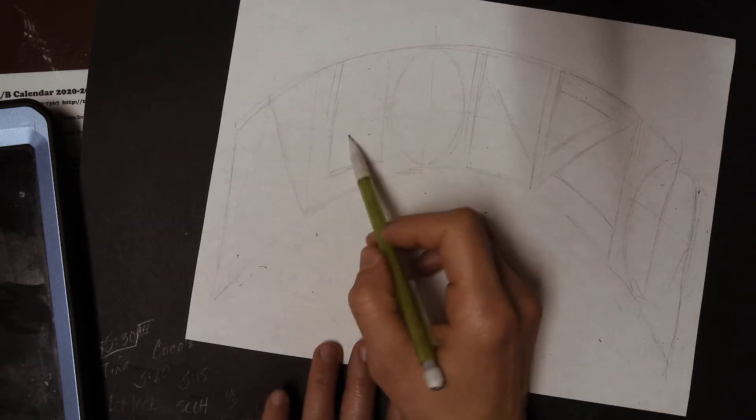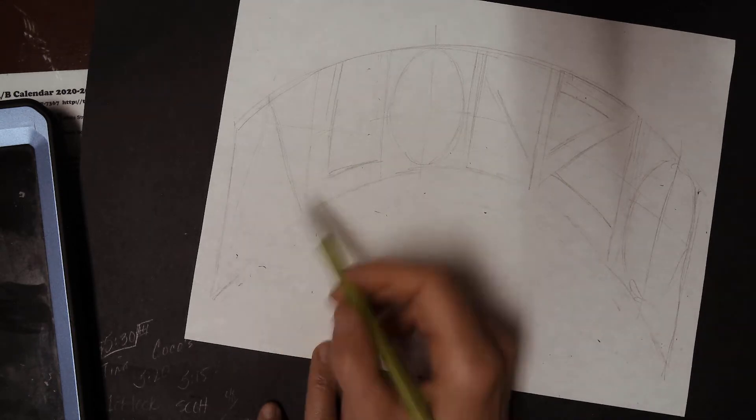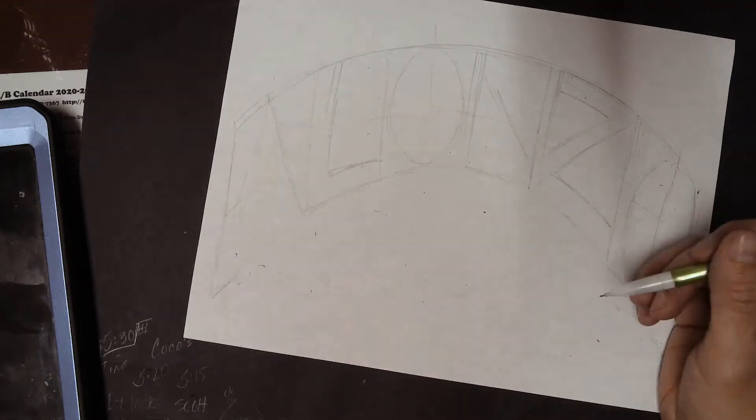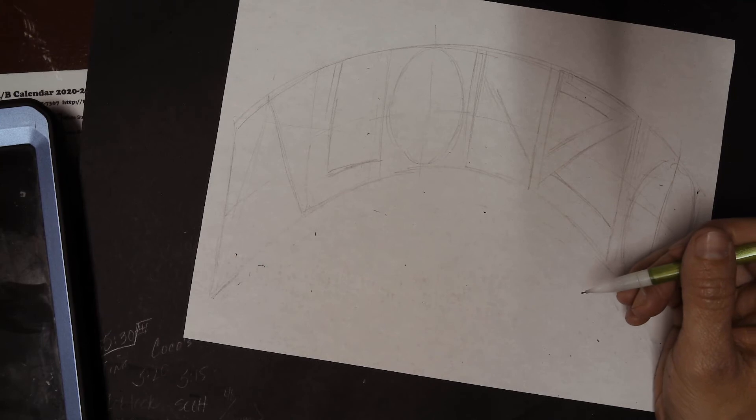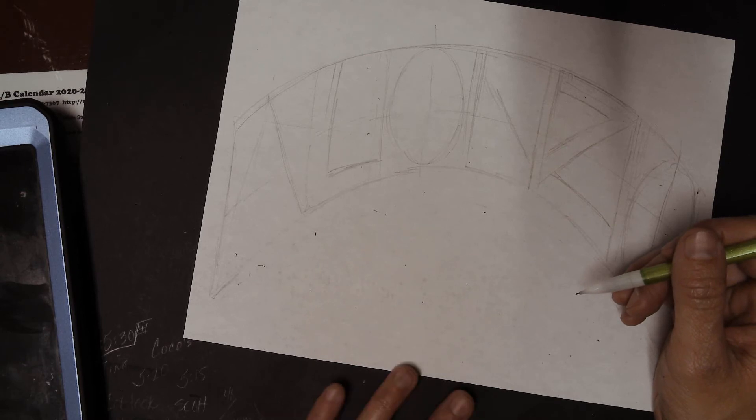So now our big job is to make them into block letters or bubble letters. Alonzo, can you put in the chat room for me, do you want them to be like rounded and bubble, or do you want them to be squared and boxed? A bubble. Okay.